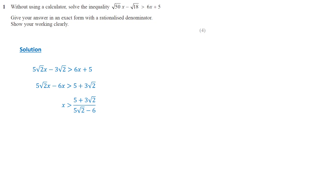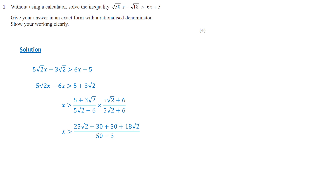Since the denominator contains a square root, we need to rationalize it. We multiply both numerator and denominator by the conjugate of the denominator, which is 5 root 2 plus 6. The numerator becomes 25 root 2 plus 30 plus 30 plus 18 root 2, and the denominator simplifies to 14.